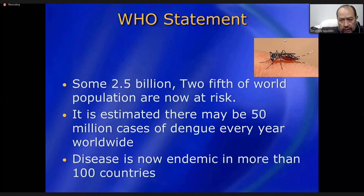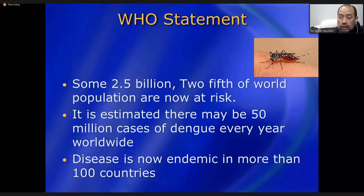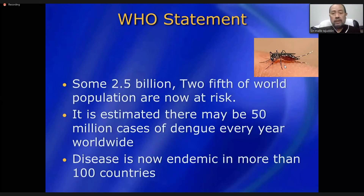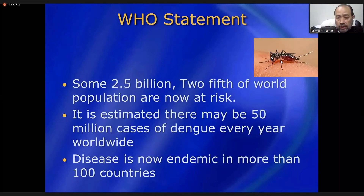Aedes aegypti is also called the tiger mosquito because of the white and black marks on its body. You can identify it by two features: first, the white and black spots; second, its sitting angle. This mosquito always sits at 45 degrees to the surface — tail up, head down — like an airplane. If a mosquito sits with its tail up and head down at 45 degrees and has spots on its body, it is Aedes aegypti, a dangerous mosquito.